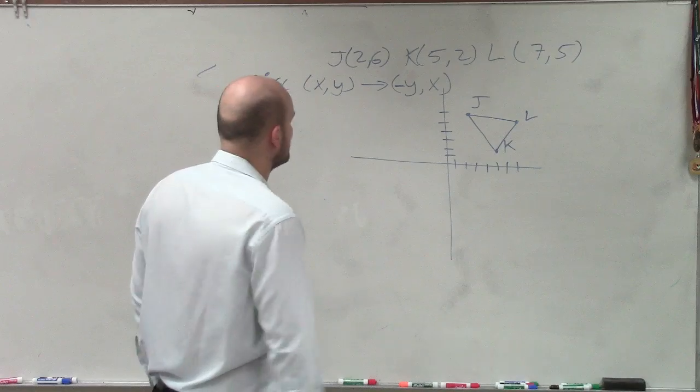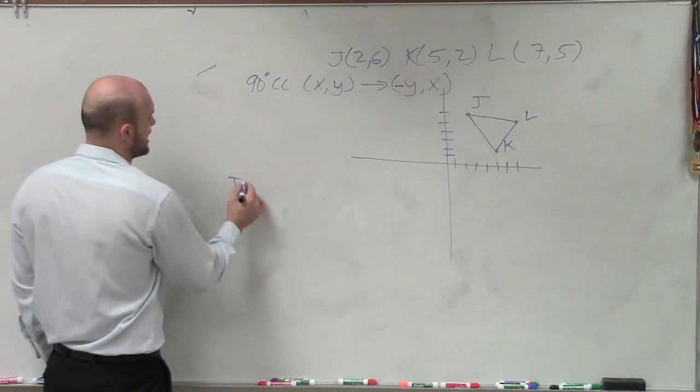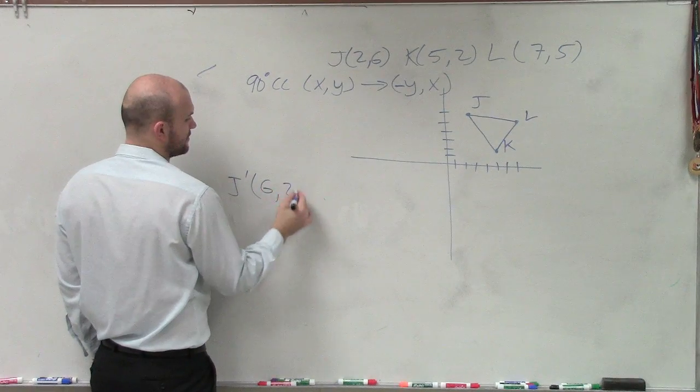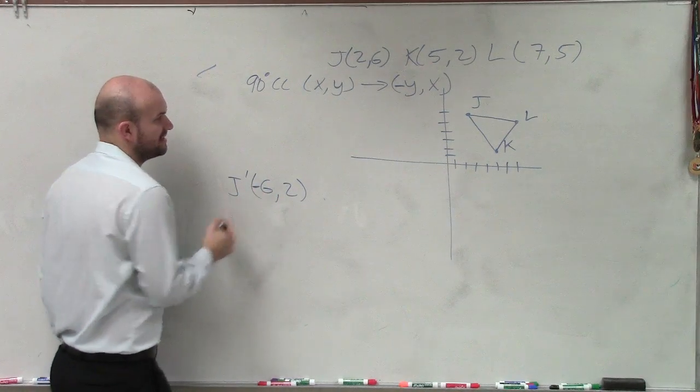So now I can do that for each one. For J prime, all I'm going to do is swap the 6 and the 2 and now make the 6 negative.